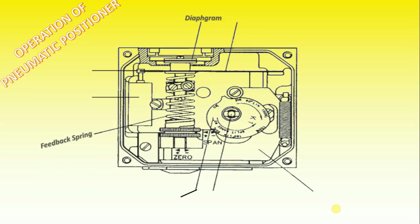The balance arm moves the spool in the pilot valve, furnishing supply air to the actuator, while at the same time air is exhausted from the actuator and vented to atmosphere through the pilot valve.